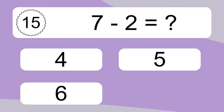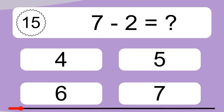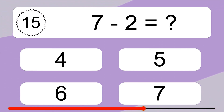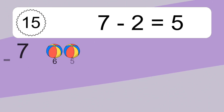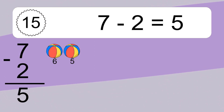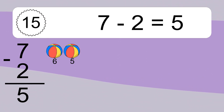7 minus 2 equals what? 7 minus 2 equals 5. Let's count it: 6, 5.